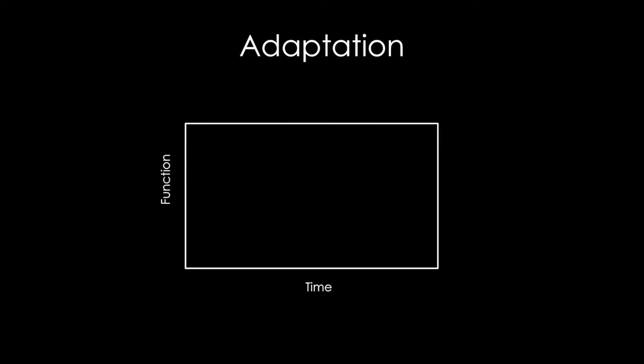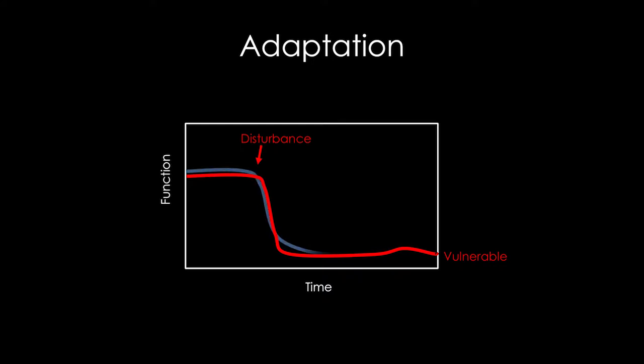When we talk about adaptation, we're really talking about how to improve the function of the farm in the face of some of these challenges. On the y-axis we have a level of function, and on the x-axis we have a projection of time. Over time, we see a disturbance, and if that disturbance impacts the function of the farm dramatically, it drops the function, and that farm is deemed vulnerable. What we'd like to see is an improvement in the farm's function to the point where, when we have that disturbance, the function may drop but then return to its original state — and that farm would be deemed resilient. What we're really looking for is a situation where the farm is actually resistant to any sort of disturbance.